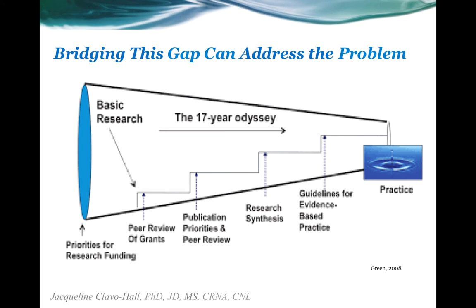One of the things Brownson and his colleagues spend time on — starting on page three through pages six or seven — is this idea of the gap between when we start doing research on a particular practice or topic and when that research actually has some meaningful impact upon practice. Over a decade ago, Green did a study that looked at the length of time it took for these things to actually happen, and he found that on average there tends to be a 17-year gap.